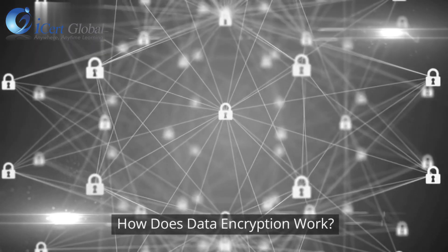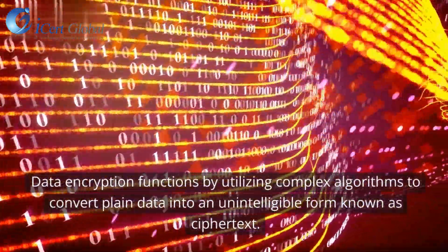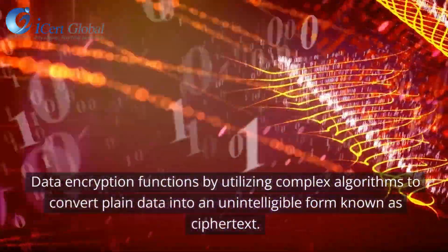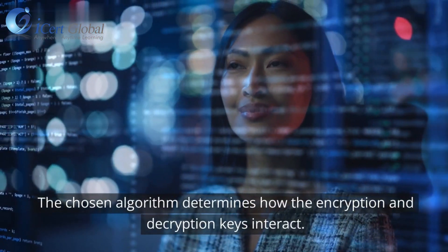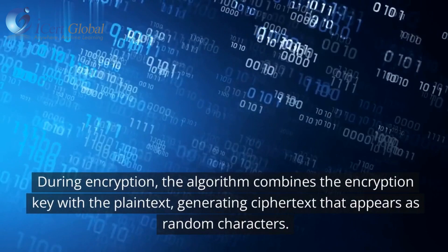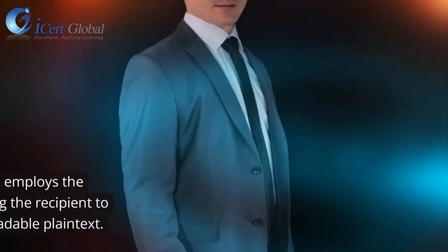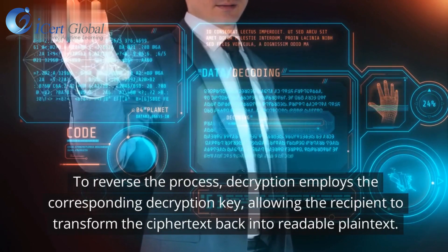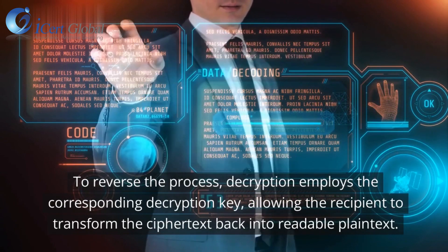How does data encryption work? Data encryption functions by utilizing complex algorithms to convert plain data into an unintelligible form known as ciphertext. The chosen algorithm determines how the encryption and decryption keys interact. During encryption, the algorithm combines the encryption key with the plaintext, generating ciphertext that appears as random characters. To reverse the process, decryption employs the corresponding decryption key, allowing the recipient to transform the ciphertext back into readable plaintext.